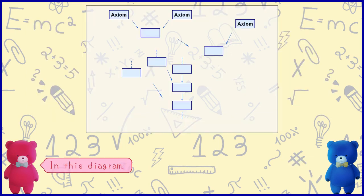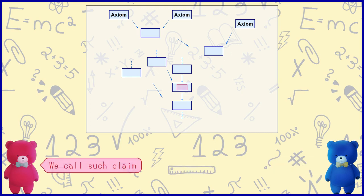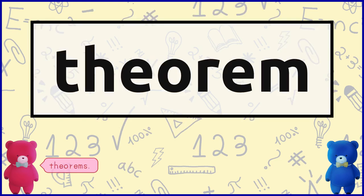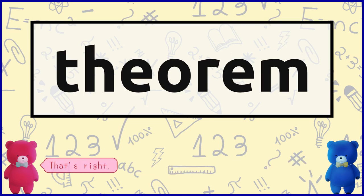In this diagram, let's assume that this claim was extremely important. We call such claim theorems. So, a theorem is an important claim. That's right.